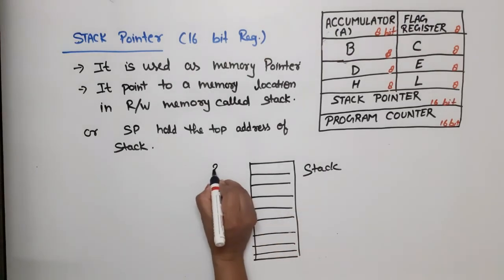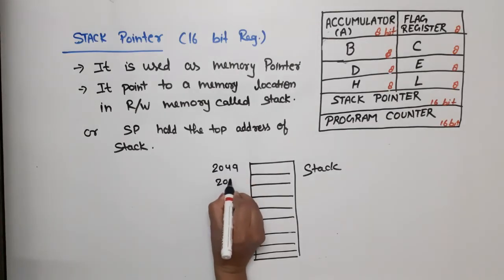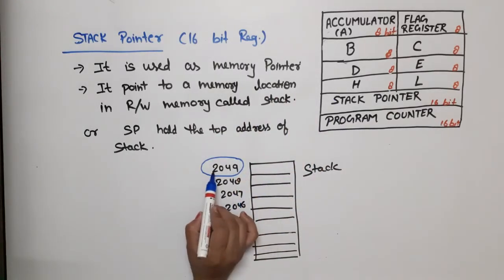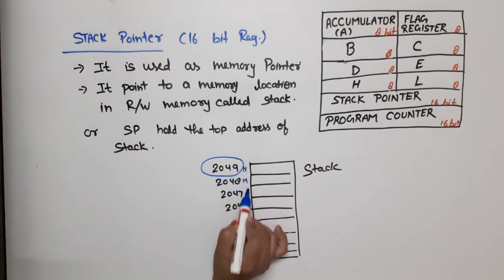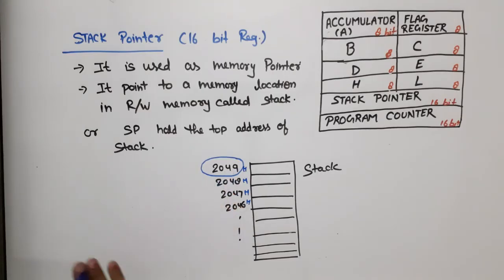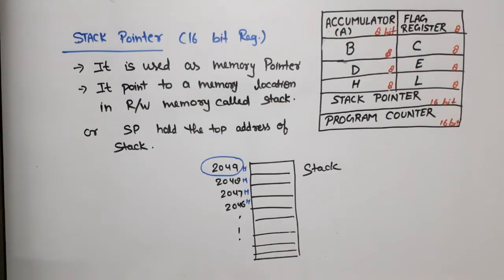Suppose this address is 2049H, 2048, 2047, 2046, and so on. The stack pointer holds the top address of the stack. If there is a memory location stored here, it says 2049H. These numbers are in hexadecimal, and each hexadecimal digit shows 4 binary bits. 4 digits means 16 bits. If we have to store 16 bits, then the capacity of the register is 16 bits. That's why this is a 16-bit register.